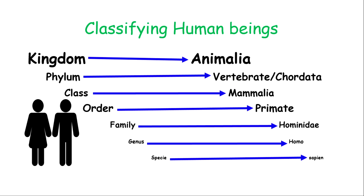Now the phylum is the subgrouping after the kingdom, so we're getting a little more narrow. Organisms are placed in either the vertebrate or invertebrate group, but human beings are classified as vertebrates, or what they call Chordata, because we have a backbone.